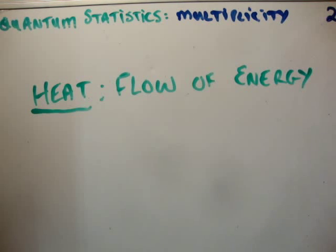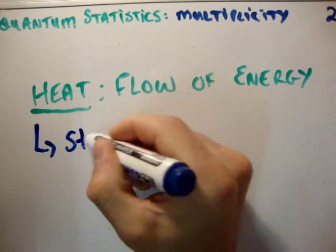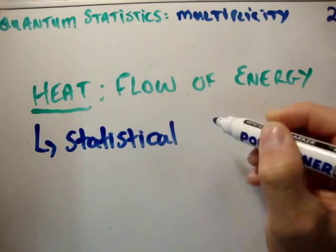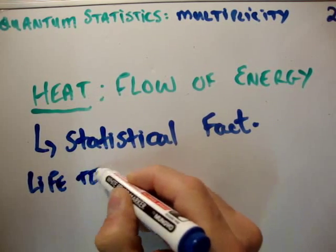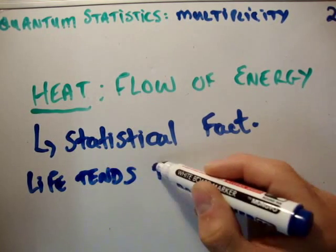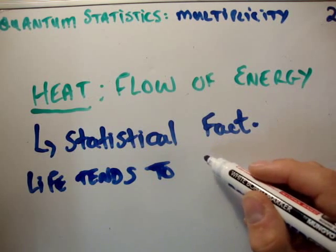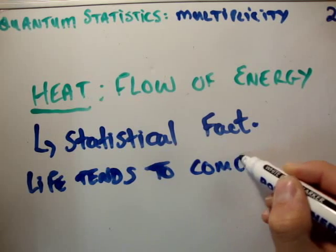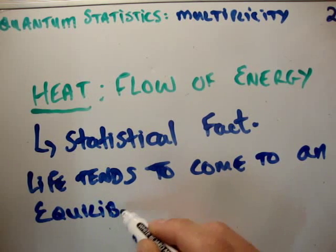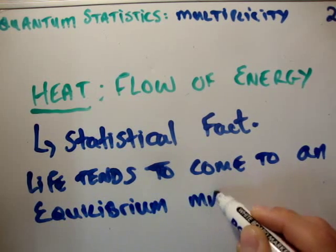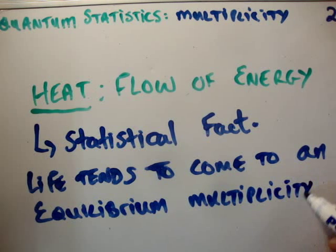People want to know, of course, well, why does heat flow, or what is it? Is it some sort of physical phenomenon, or what is it? Well, the best description for heat is that it is a statistical fact. The fact that life tends to come to equilibrium multiplicity. We know that nature wants to be in equilibrium, and multiplicity is no exception, that life tends to come to an equilibrium multiplicity.